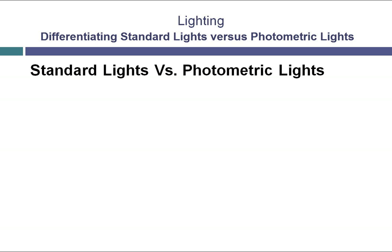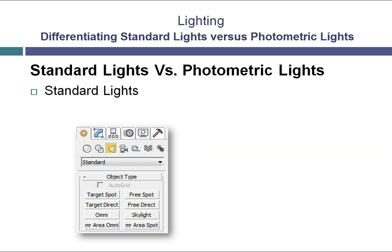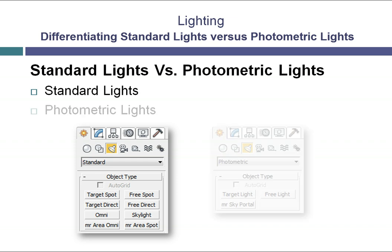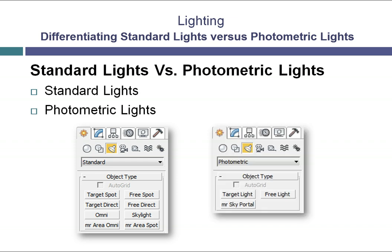When working in 3ds Max to create 3D renderings, there are two main categories of lights to choose from: standard lights and photometric lights. Standard lights consist of free and target lights, as well as the skylight and the mental ray specific lights. The photometric lights contain lights that function using a physically accurate lighting model. There are both free and target photometric lights, as well as a sky portal that works with mental ray and eye ray.